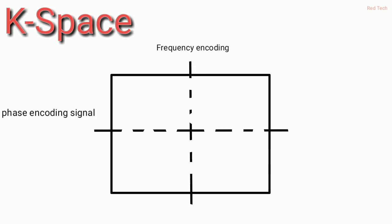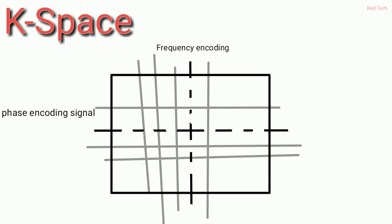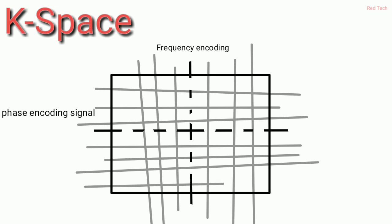For example, if we perform any scan requiring multiple slices — like 256 or 128 slices — there are two lines: horizontal and vertical, as explained. The horizontal represents frequency encoding and the vertical represents phase encoding, and these are filled line by line.